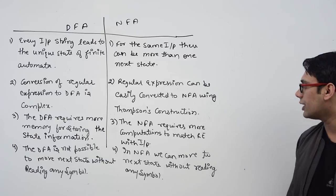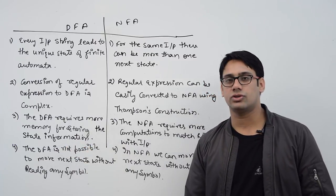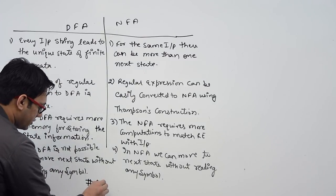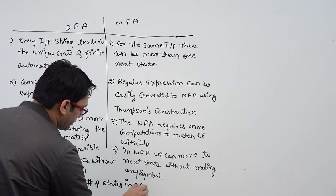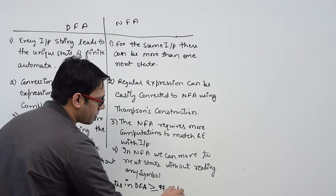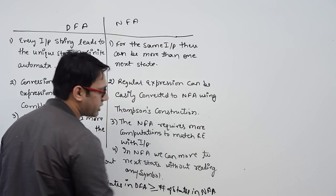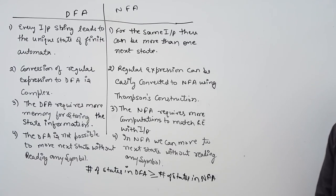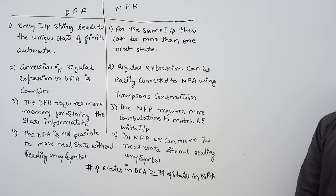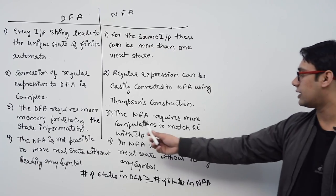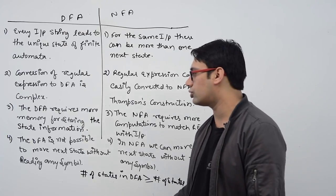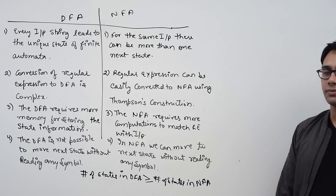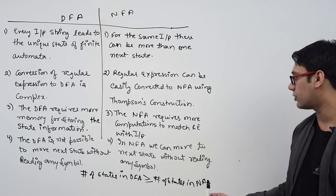You can then convert that NFA to a DFA. DFA requires more memory for storing state information. In general, the number of states in a DFA is greater than or equal to the number of states in an NFA. If you draw a minimized DFA, the number of states is always greater than or equal to the number of states in the NFA. So DFA requires more memory, while NFA requires less memory and less computation.